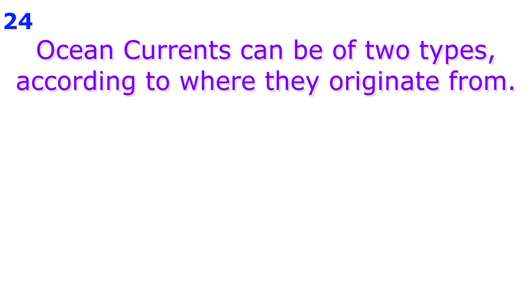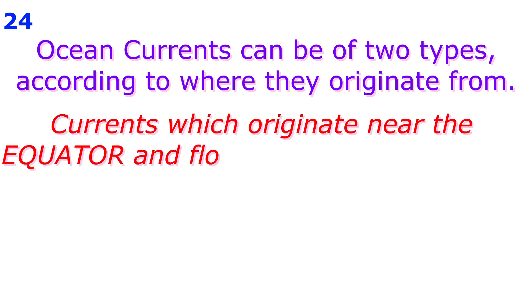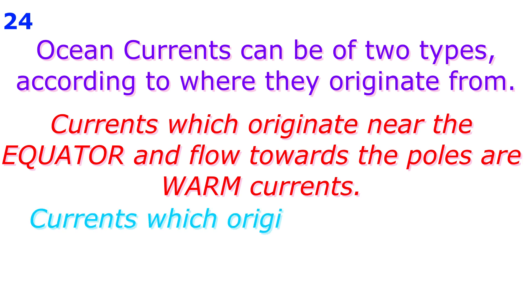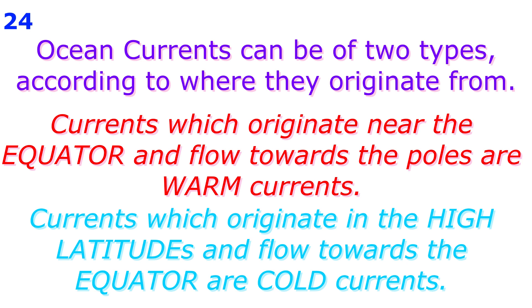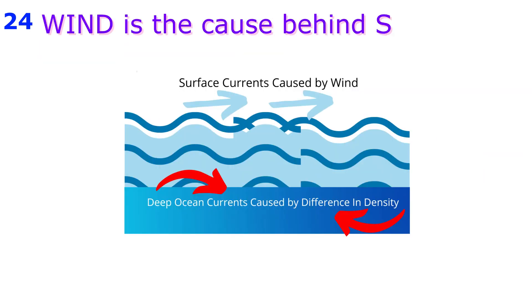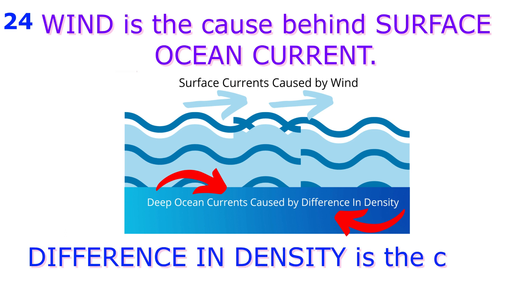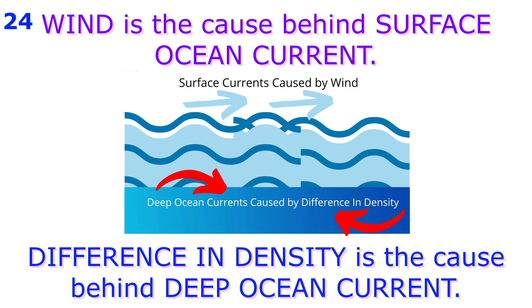Ocean currents can be cold or warm. Currents that originate near the equator and flow towards the poles are warm currents. Those that originate in the high latitudes and flow towards the equator are cold currents. Ocean currents are powered by the wind system of the world. The causes of currents that are not powered by winds are related to the density of ocean waters.